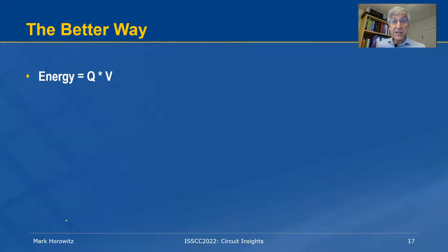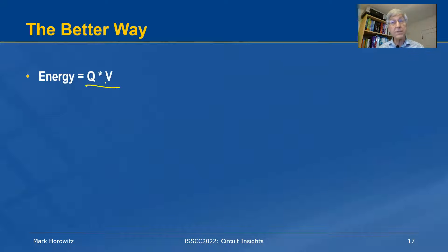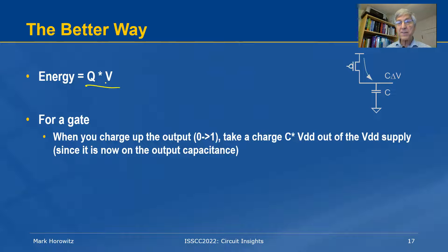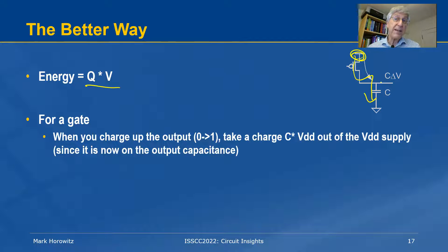I know the amount of energy is Q times V. When the PMOS transistor is charging the capacitor up, it's taking charge from the power supply and putting it on the capacitor. The amount of charge is exactly the change in voltage times capacitance — delta V times C. Generally speaking in CMOS circuits, delta V equals V_DD, so the charge transferred is C·V_DD.